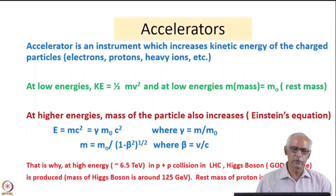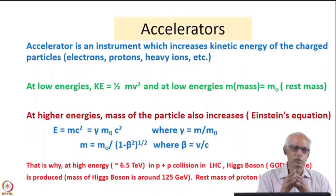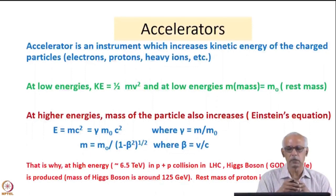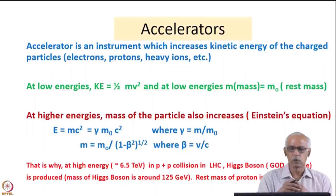Let us see what is an accelerator. An accelerator is an instrument which increases the kinetic energy of charged particles — it could be electrons, protons, or even heavy ions. So different kinds of accelerators will increase the kinetic energy of different kinds of particles. At low energy, the kinetic energy is half mv², and at this low energy the mass of the particle will be m₀, the rest mass, so gamma will be 1.